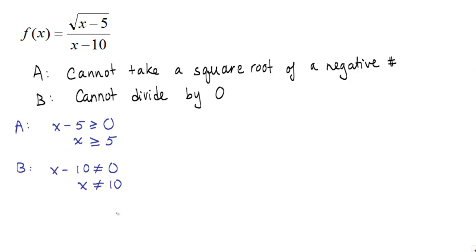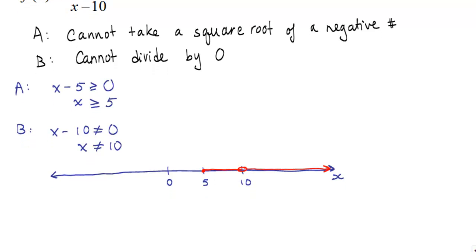If we draw a number line for x, it must be greater than or equal to 5. We can start here and we can go up to 10. We can't touch 10, so we're going to have a hole here, and then we're going to continue on. There's just one spot where x cannot equal 10.